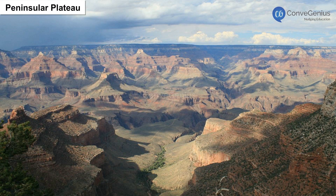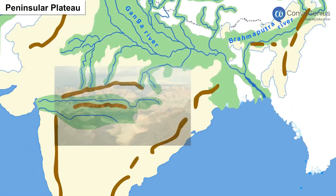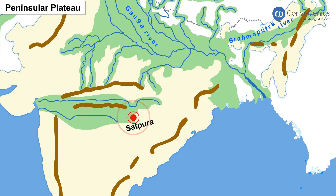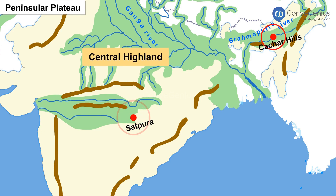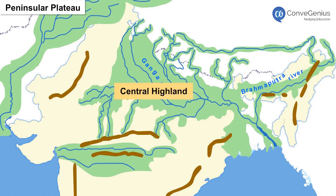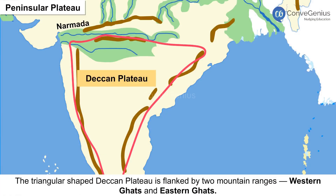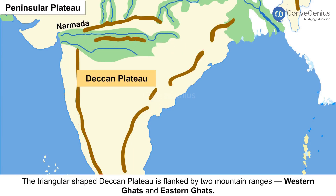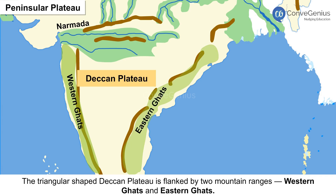Peninsular Plateau. The Peninsular Plateau is made up of metamorphic and igneous rocks. From the Satpura Range, it stretches far into the east up to the Kacher Hills. It is divided into two major regions — the Central Highland and the Deccan Plateau — by rivers Narmada and Tapi. The Central Highland lies to the north of River Narmada and includes the Aravalli Range, Malwa Plateau, Chhota Nagpur Plateau, and some parts of the Vindhya Range. The triangular-shaped Deccan Plateau lies to the south of Narmada and is flanked by two mountain ranges, the Western Ghats and Eastern Ghats.